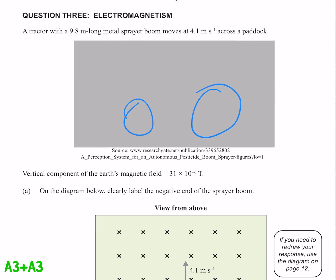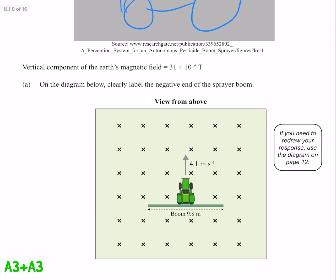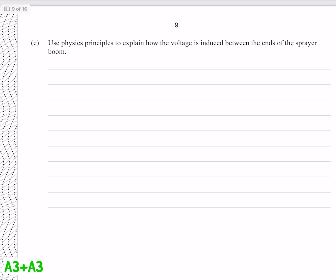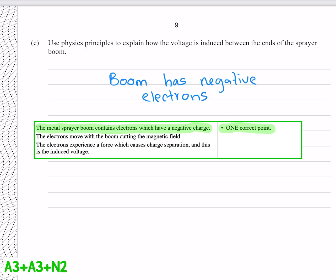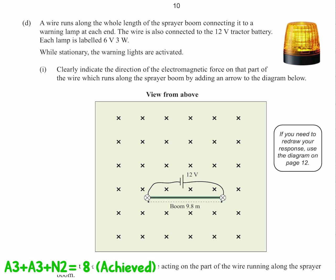Question 3 is about a fine looking tractor. Use physics principles to explain how the voltage is induced between the ends of the sprayer boom. Well for one thing, the boom has negative electrons. And while we've basically explained nothing, this is still enough for an achieved point. Well that's all the level 2 papers, so let's just move on to the level 3s.